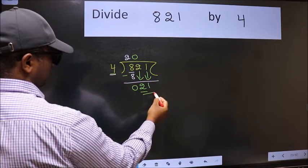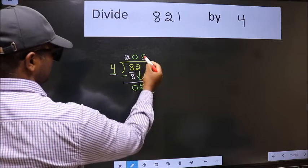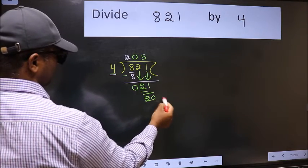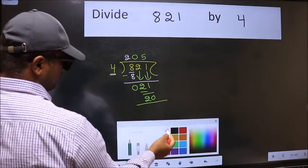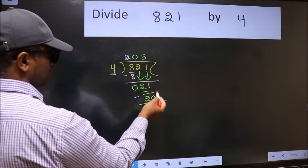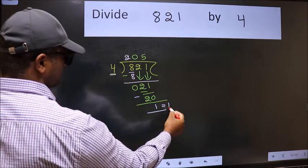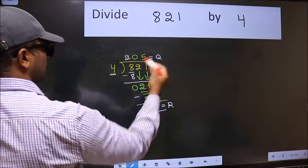Now 21. A number close to 21 in the 4 table is 4 times 5 equals 20. Now we should subtract. We get 1. No more numbers to bring down, so we stop here. This is our remainder and this is our quotient.